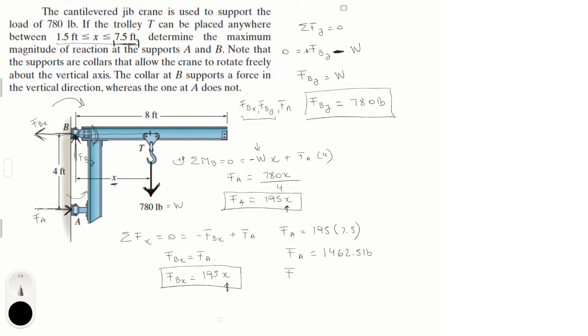F of B of x is the same as F of A, so it's also equal to 1462.5 pounds. And F of B of y is 780. So we just have to solve for the magnitude of F of B, and that is super easy to do,